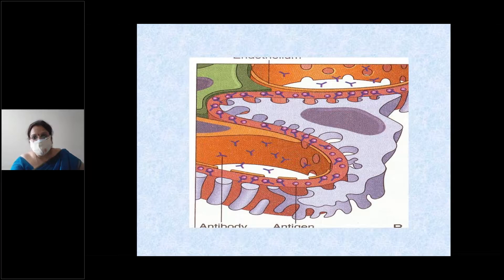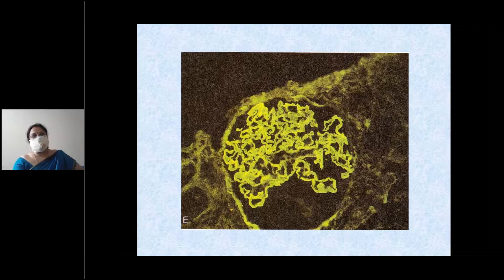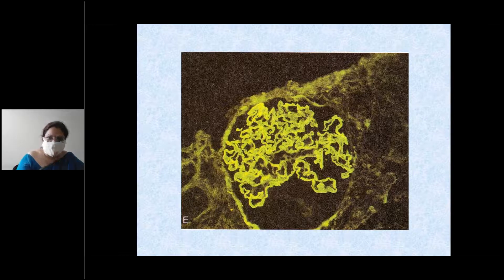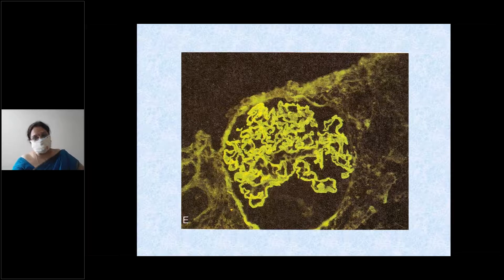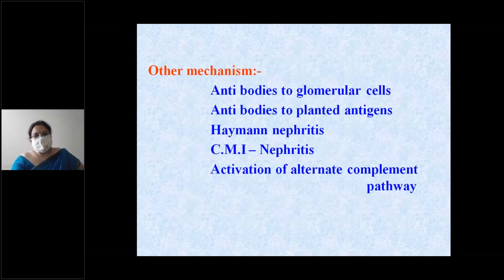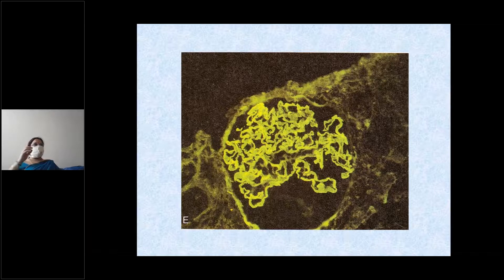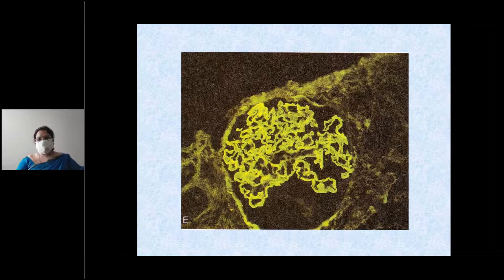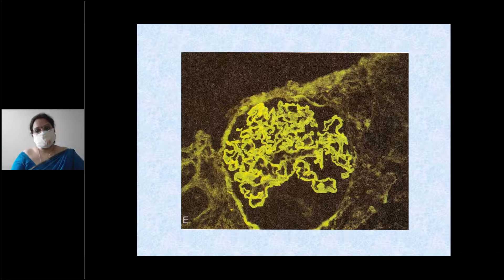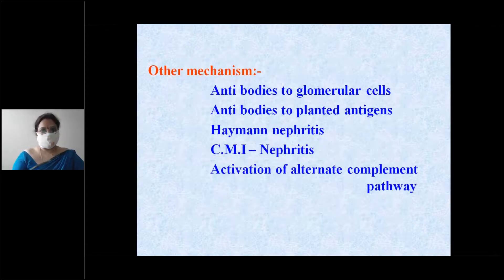To summarize: subepithelial and subendothelial deposits produce a granular immunofluorescence pattern; deposits along the basement membrane produce a diffuse linear immunofluorescence pattern. On electron microscopy, note whether deposits are subendothelial, subepithelial, or along the basement membrane.